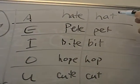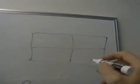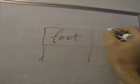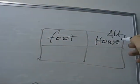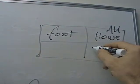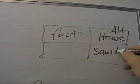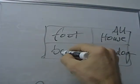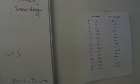...and we get hat, pet, bit, hop, cut. There are four more like 'foot', 'house' - we call this the owl sound - 'saw' or 'dog', and then we have 'boy'. So those are the 14 sounds.